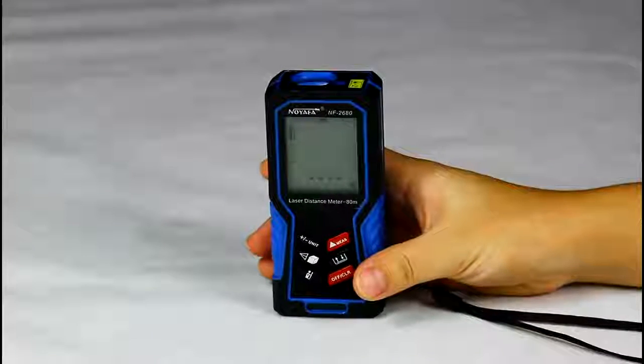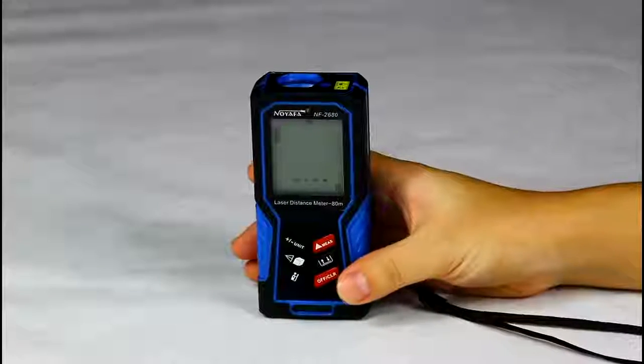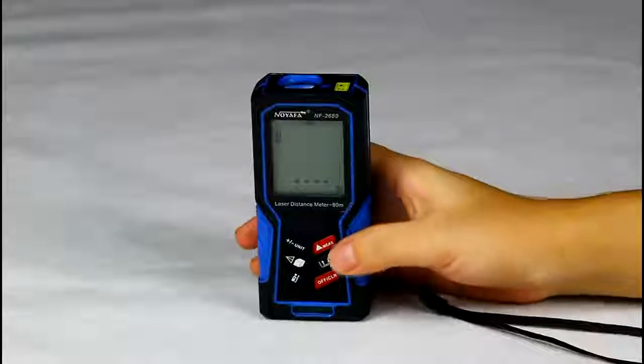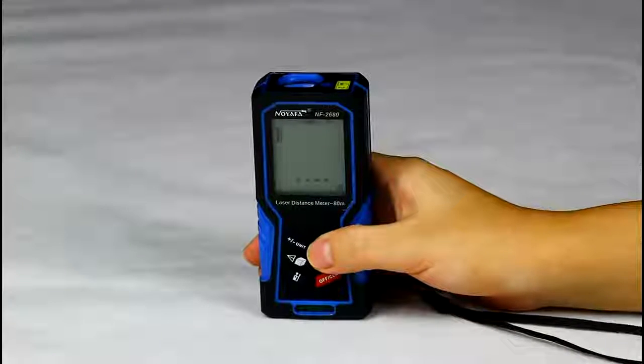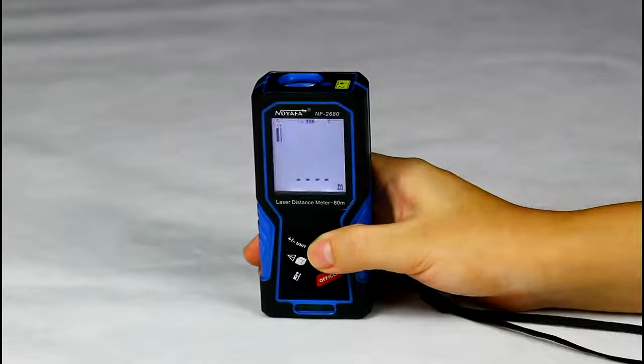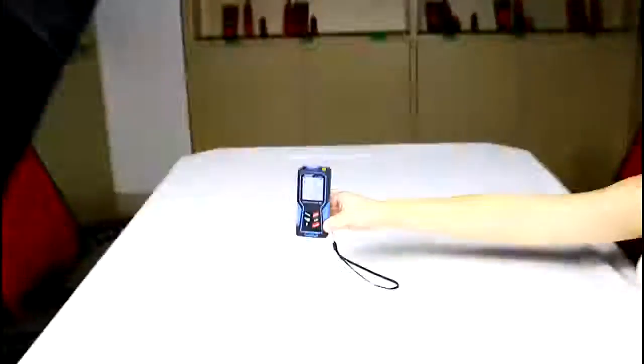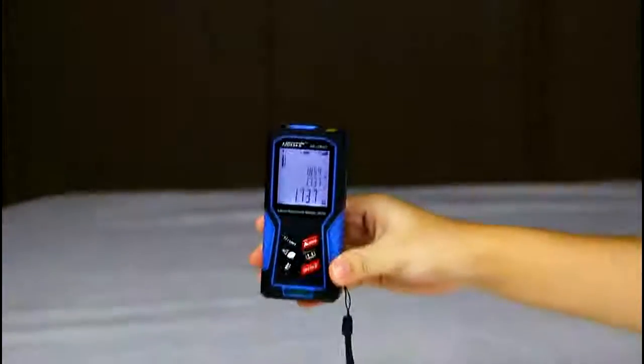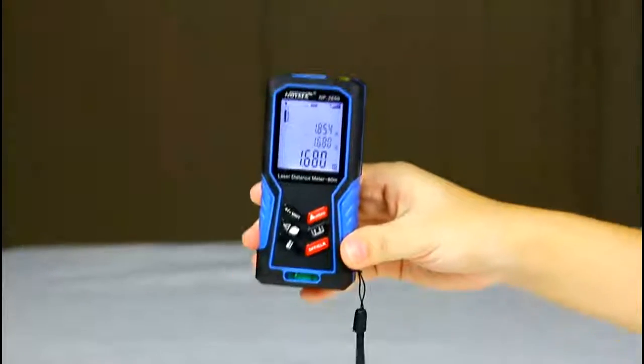Now, let's move to continuous measurement. We can press MEAS for 2 seconds to switch to continuous measurement mode. Let's move the device around. We can see the data is changing with the item's location.